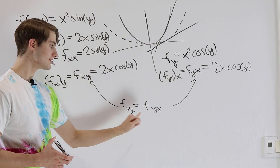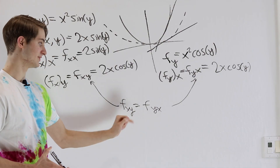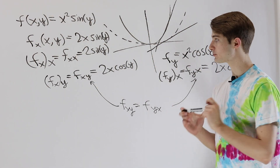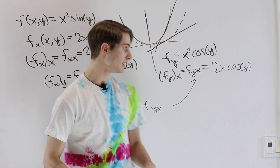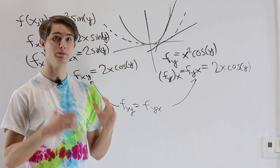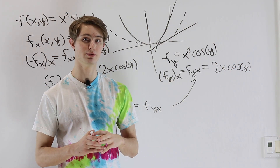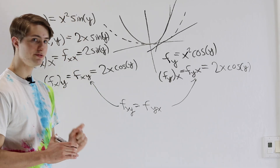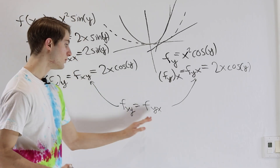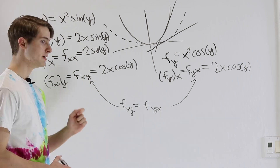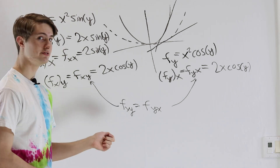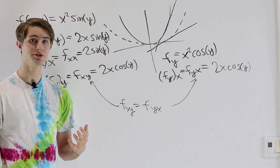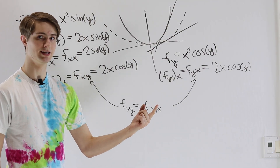It turns out this is almost always the case. It is true in any situation where the mixed partial derivatives f_xy and f_yx are both continuous around a particular point — that's called Clairaut's theorem. We want to understand why this is always true, because it's a very powerful fact, and to do that we're going to hop into MATLAB.